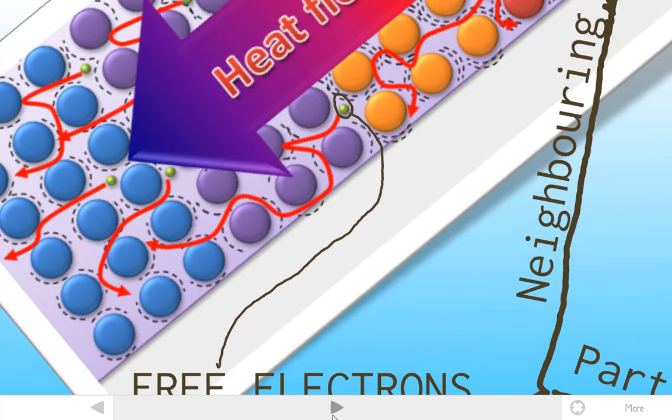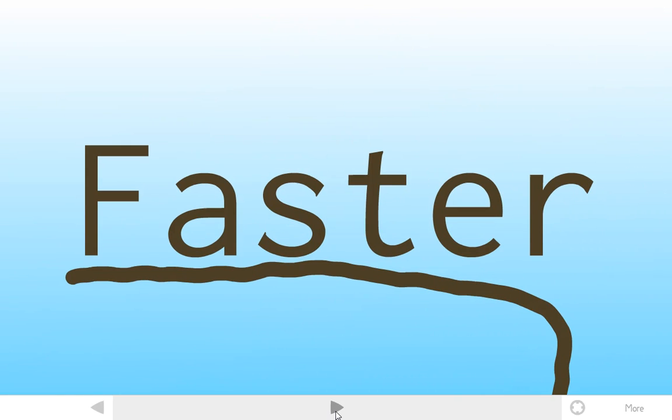As they move about, they also collide and hit these atoms, causing the overall structure of the metal to gain energy and there is a faster transfer of heat energy by conduction.